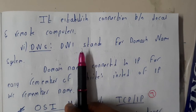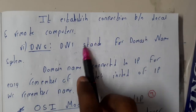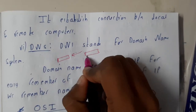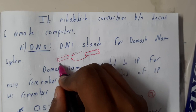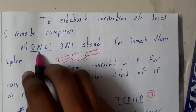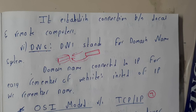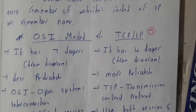DNS stands for Domain Name System. Every website has a particular IP address, and DNS assigns a human-readable name (domain name) to that IP address. When you type the name, you are redirected to the IP address — since remembering names is much easier than numbers. In the next tutorial, we'll go through the differences between the OSI model and TCP/IP model.